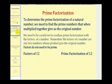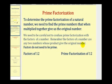To determine the prime factorization of a natural number, we need to find the prime numbers that when multiplied together give us the original number. We need to be careful not to confuse prime factorization with the factors of a number. Remember, the factors of a number are any two numbers whose product gives the original number.